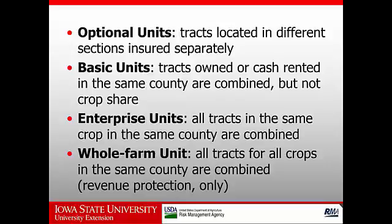In between we have several other choices. Basic units, where some of our tracts can be combined if they're owned or cash rented. We can't combine crop share leases because we have only a percentage interest in that crop and the landlord has the other percentage. Enterprise units basically include both crop share, cash rented, and owned units all in the same tract, but still insuring each crop separately. The whole farm unit combines all of the crops into one policy.